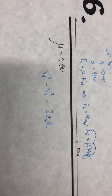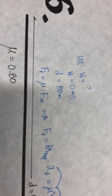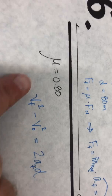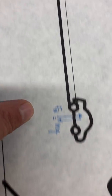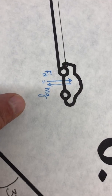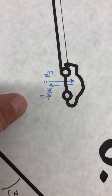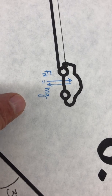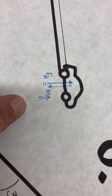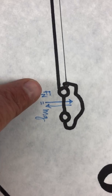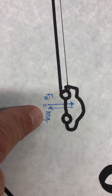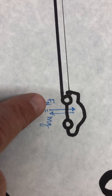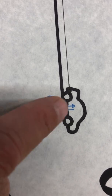The level road is going to help us out. Mu is 0.8, and that's equal to friction force over normal force. The normal force is equal to mg when it's a level road, so normal force equals mg. Beautiful thing.